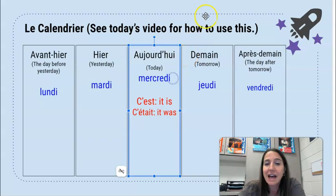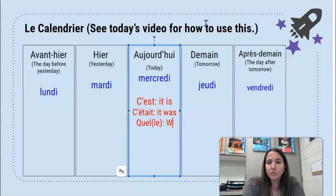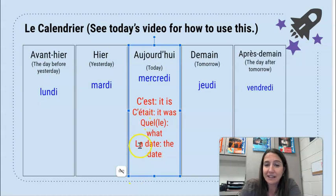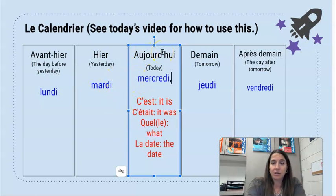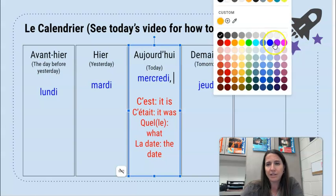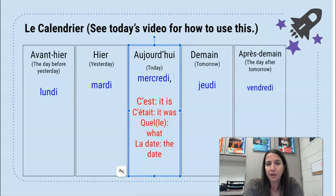Maintenant, quelle est la date? Let me put this word in for you. Quel — which can be spelled like this or with an extra L-E — means 'what.' So when I ask you quelle est la date aujourd'hui, I'm asking: what is la date, the date? Also, we do not capitalize our days of the week in français — typically they are lowercase. Same with the months of the year.